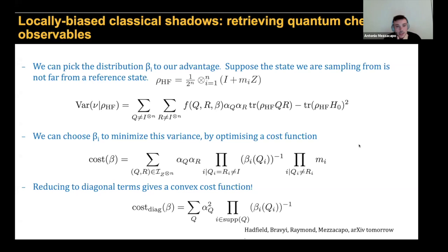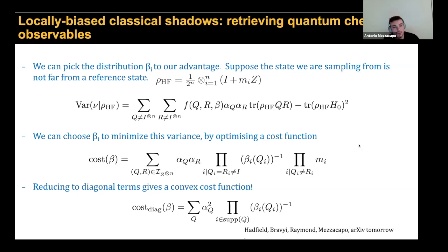What is this cost function? All quantum algorithms targeting ground state properties make the assumption that one starts from a good reference state — this is true for VQE and also for phase estimation. If we don't initialize phase estimation with a good reference state, we have no chance of retrieving the ground state energy of the system. The simplest reference state for quantum chemistry problems is of course the Hartree-Fock state. What we do here is write down analytically the variance of the biased estimator defined in the previous slide, evaluated on this Hartree-Fock reference state, which is a product state.